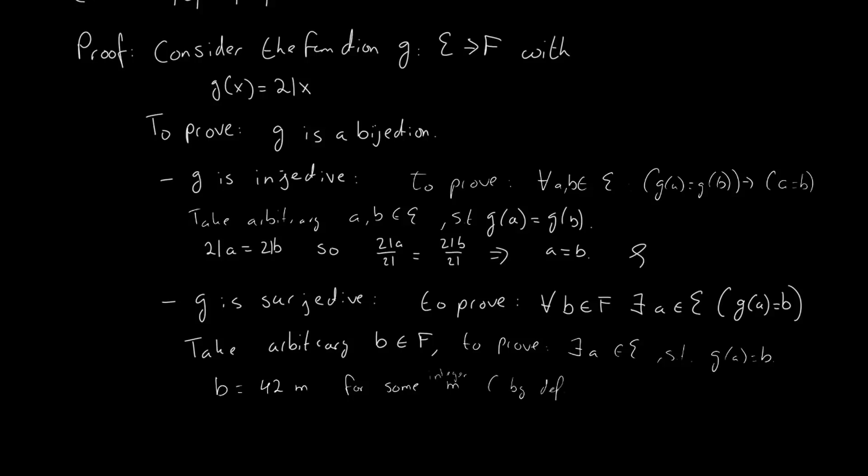And if b is 42 times m then it's 21 times 2 times m. And so hang on that means it's 21 times x where x is some element from E because 2m is an even number and thus must be some element of E by definition of E.